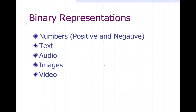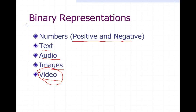In this lecture we're going to be talking about different ways of converting five types of information: we're going to talk about numbers — positive and negative numbers (in the past lecture we just talked about positive numbers) — we're going to talk about text, we're going to talk about audio, we're going to talk about images, and we're going to talk about video. Video is special because it's kind of a mixture of images and audio.